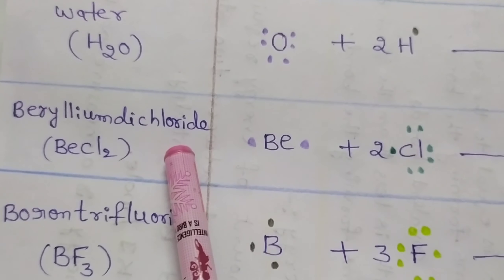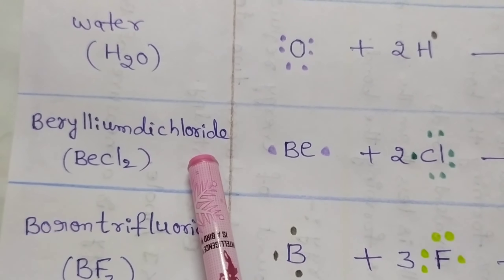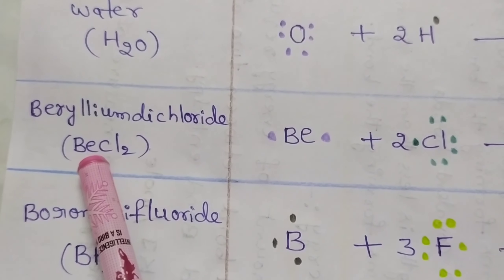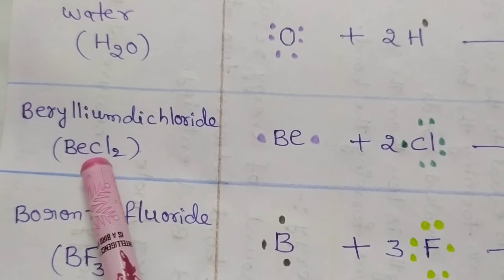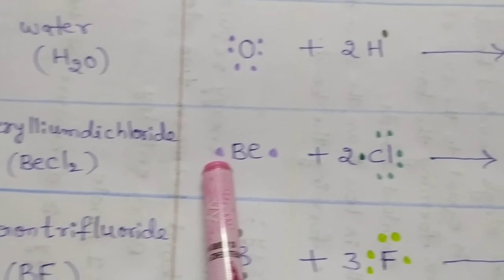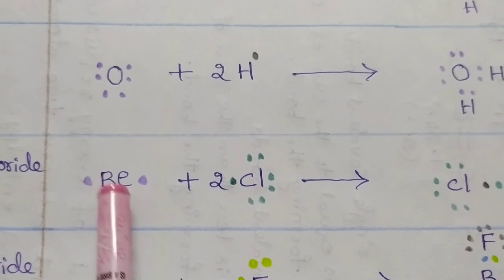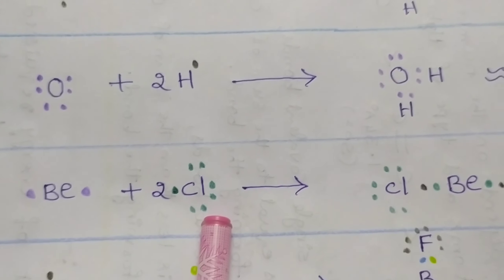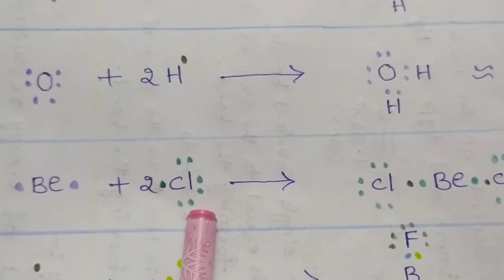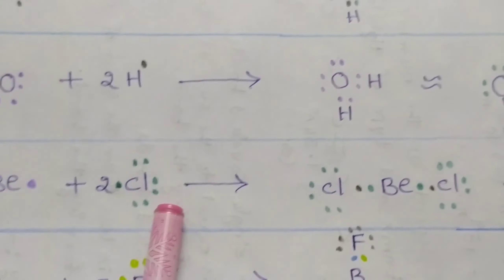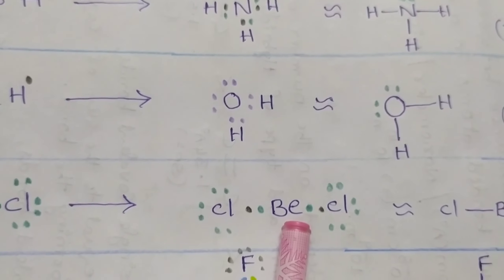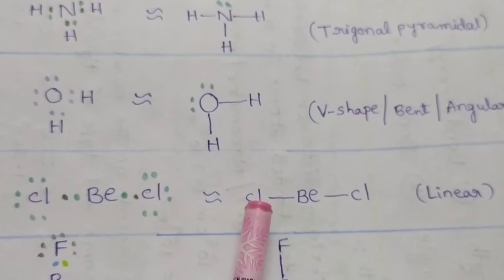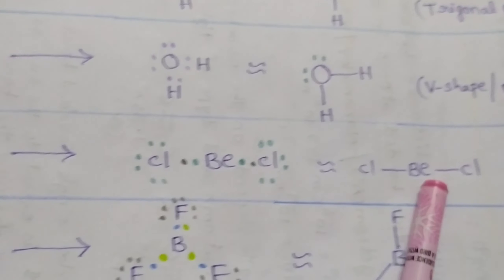Now we discuss the Lewis structure of beryllium dichloride. In the beryllium dichloride molecule, the central atom is beryllium. This beryllium contains two valence electrons, and it reacts with two chlorine atoms, which each contain seven valence electrons, to form the beryllium dichloride molecule. This molecule is linear in shape.